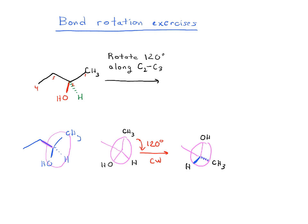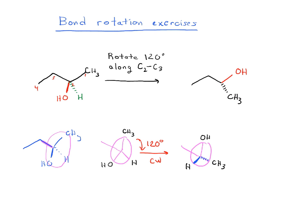So we can redraw our molecule like this. The OH is now a straight line, the methyl group is now going to be a dash — it's going to be in the back. The OH is up here, and our H is going to be a wedge. So that is doing the 120 degree bond rotation clockwise.